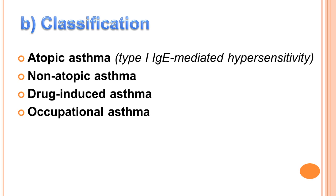The second one is non-atopic asthma. It is triggered by processes including respiratory infections, usually viral, stress, exercise, or cold temperature, etc. Hen suyễn không dị ứng được kích hoạt bởi các quá trình bao gồm sự nhiễm trùng đường hô hấp, thường là do virus, stress, do vận động, hoặc do nhiệt độ lạnh, v.v.